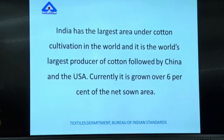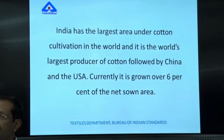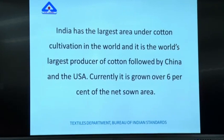India has the largest cotton cultivation area in the world, followed by China and the USA. Until recently, India was number three, USA was number one, and China was number two. India has now come to number one in the last two to three years, even though there has been practically no increase in the area under cultivation for several decades.